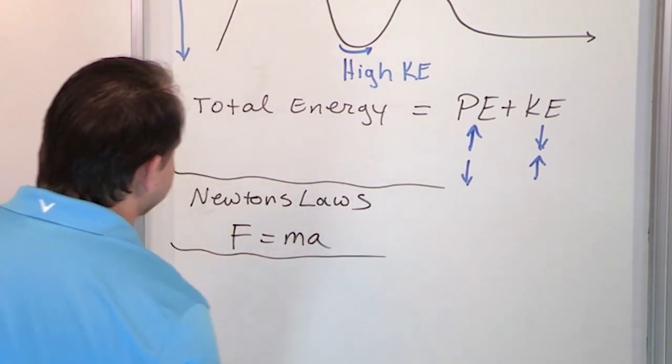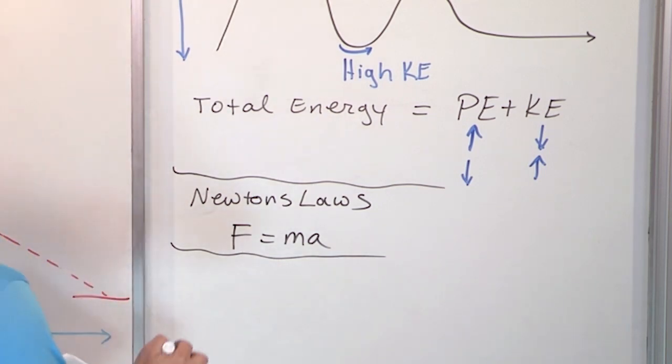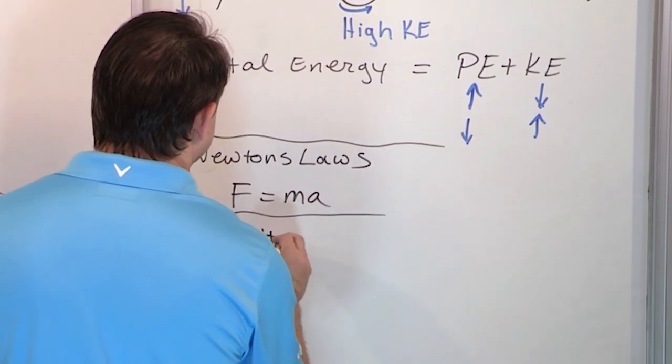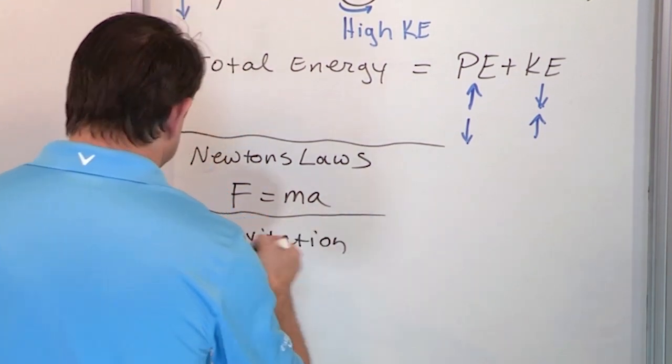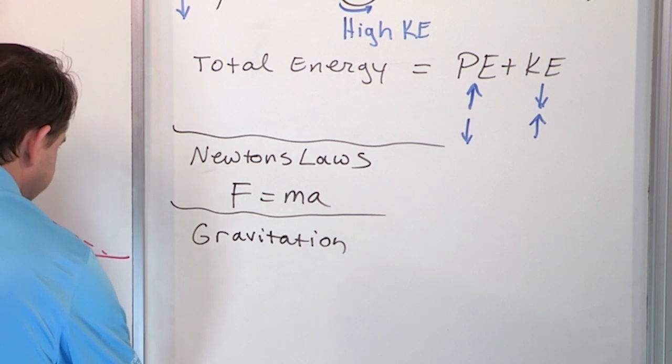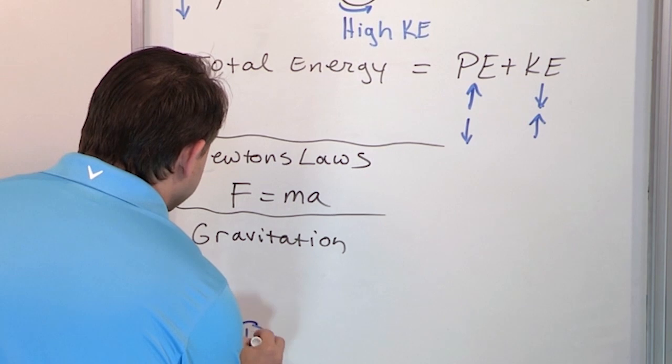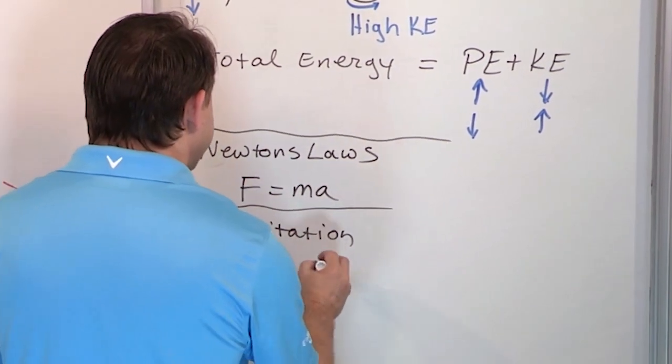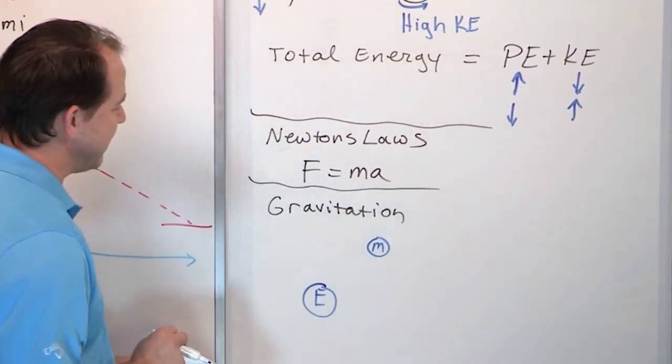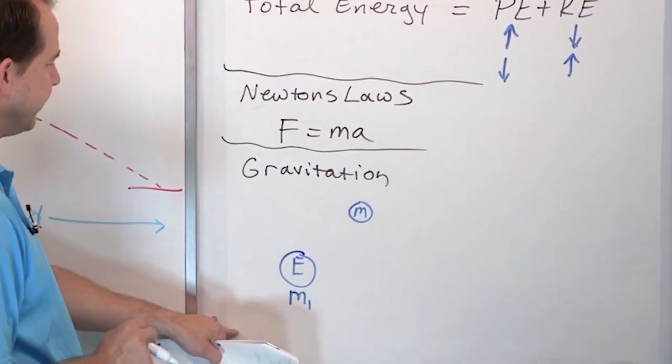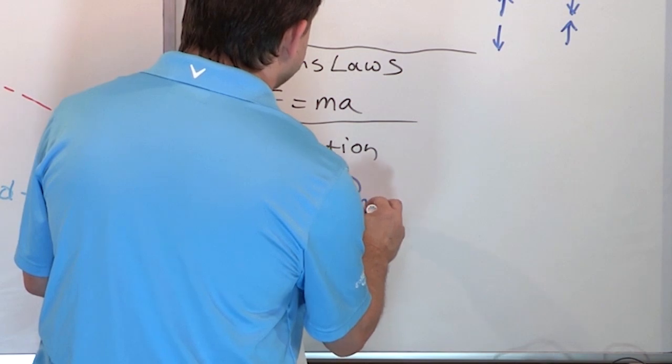And then after we talk about Newton's laws for a while and solve tons of different types of problems, we're going to talk about Newton's law of gravitation, which is a really big deal, obviously, because we live on earth and there's gravity here. What does this mean though? If we have a planet, we're going to call it earth and we have a moon here. So the earth has some mass. We call it M1 and the moon has some mass and we call it M2.